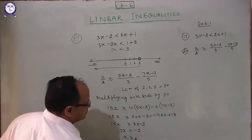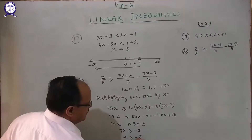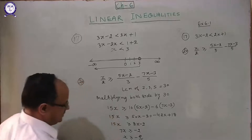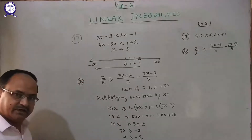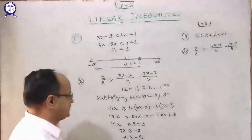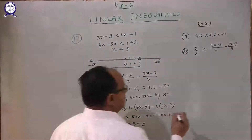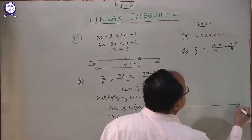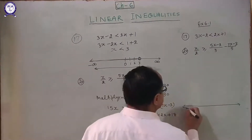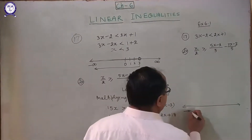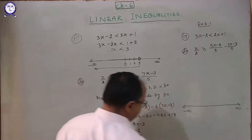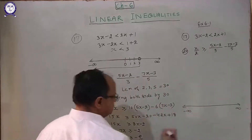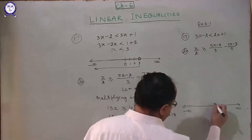Therefore x is greater than or equal to minus 2 by 7. Now we represent this on the number line from minus infinity to plus infinity, marking 0.